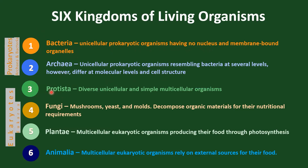Third, Protista: the kingdom of Protista includes diverse unicellular and simple multicellular eukaryotic organisms. This group is often considered a catch-all for eukaryotes that do not fit neatly into the other kingdoms. Fourth, Fungi: Fungi are eukaryotic organisms, including familiar organisms like mushrooms, yeasts, and molds. They obtain nutrients through organic material absorption and are important decomposers in ecosystems.